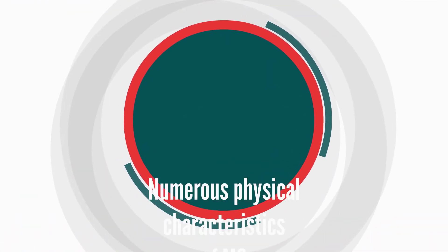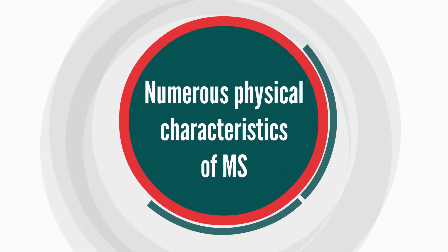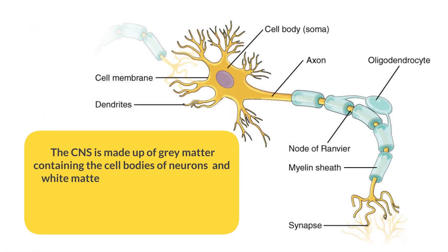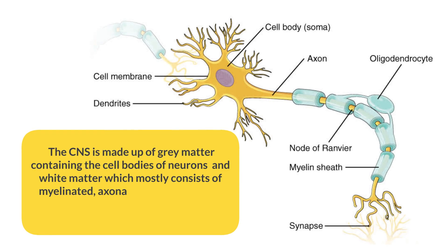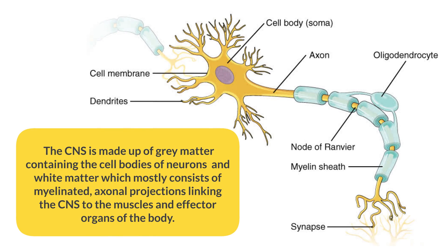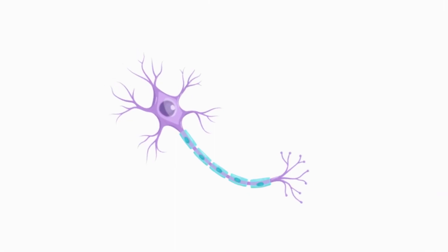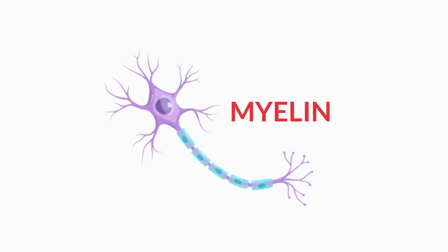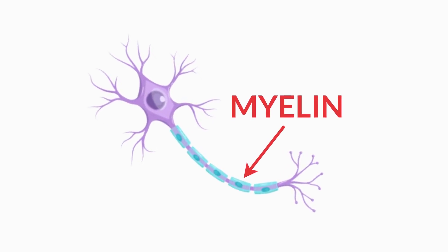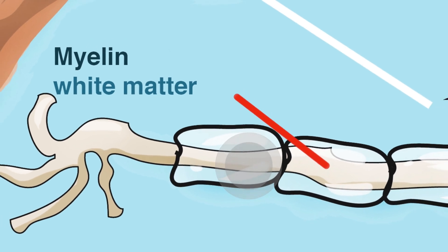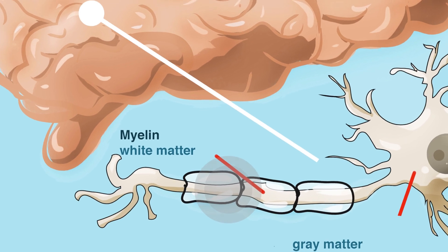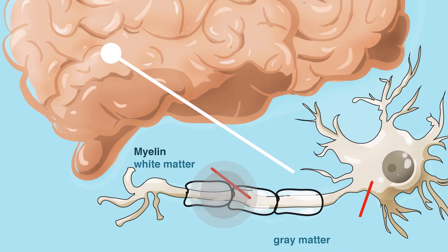Neuropathological examinations have revealed numerous physical characteristics of MS. The CNS is made up of gray matter containing the cell bodies of neurons, and white matter, which mostly consists of myelinated axonal projections linking the CNS to the muscles and effector organs of the body. Myelin is a fatty sheath surrounding nerves and is essential for maintaining fast and efficient nerve communication. Lesions in white matter are typically seen in MS due to the destruction of myelin and surrounding inflammation. These are variable in size and number, but progressively worsen with time.